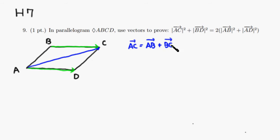So we can replace this, BC, and use AD instead. So you have vector AB plus vector AD. So that's vector AC. So how about the vector BD?